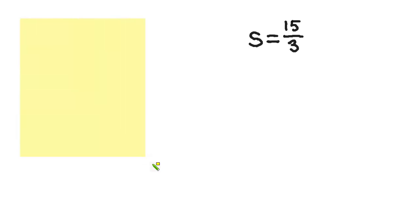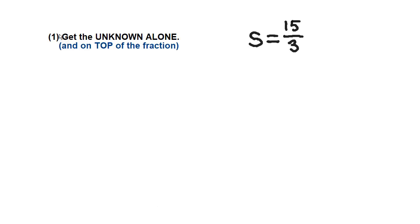I'm going to be showing you over here on the left side the three basic keys to solving these puzzles. The main idea: get the unknown alone. And if there's a fraction, you want it on top of the fraction. So if you look over here, we need to get speed S alone.